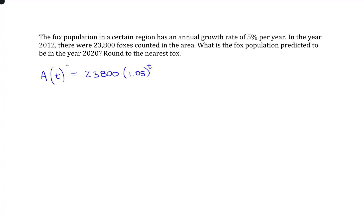So, this is the amount 23,800 in 2012. If we want to know what the population is going to be in 2020, that's going to be 8 years beyond. So, the time would be 8, and we would do 23,800 times 1.05 to the 8th.